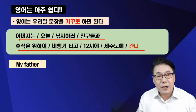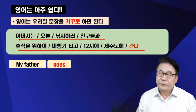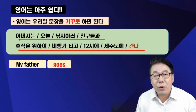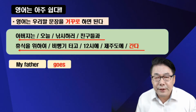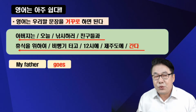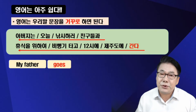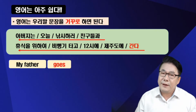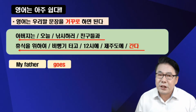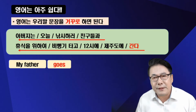자, 간다를 영어로 해볼까요? 간다가 go죠. go인데 왜 goes라고 했죠? 주어가 3인칭 단수일 때는 s를 붙인다. 이건 발음상 es를 붙인 건데, 솔직히 이거 중요시 여기지 않습니다. 무시해도 돼요. 그냥 go만 나와도 다행입니다.